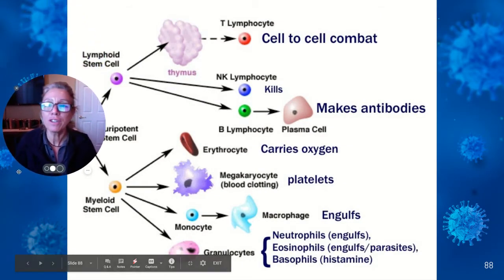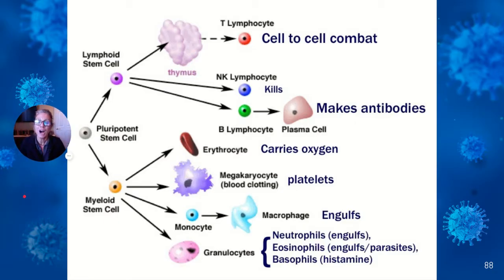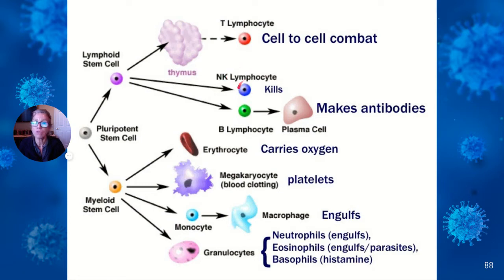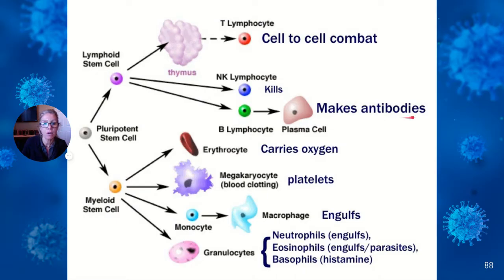There is a pluripotent stem cell which leads to your lymphoid stem cells. T cells go to the thymus to mature — that's why they're called T cells. This T lymphocyte could become your helper T cell, cytotoxic T cell, or memory T cell. Those that do not go to the thymus can be natural killer cells — they kill anything that displays a foreign antigen, whether it's a cancer cell or one that's been infected. From your lymphoid cells you also get B cells, which if stimulated will make plasma cells that secrete antibodies.